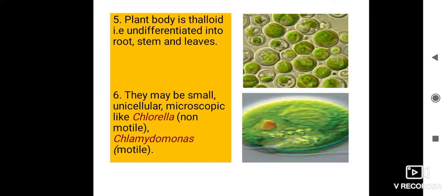The plant body is thalloid, meaning it is undifferentiated into root, stem, and leaves. They do not show any differentiation into root, stem, and leaves. The structure is called thallus — a plain body structure that is undifferentiated.